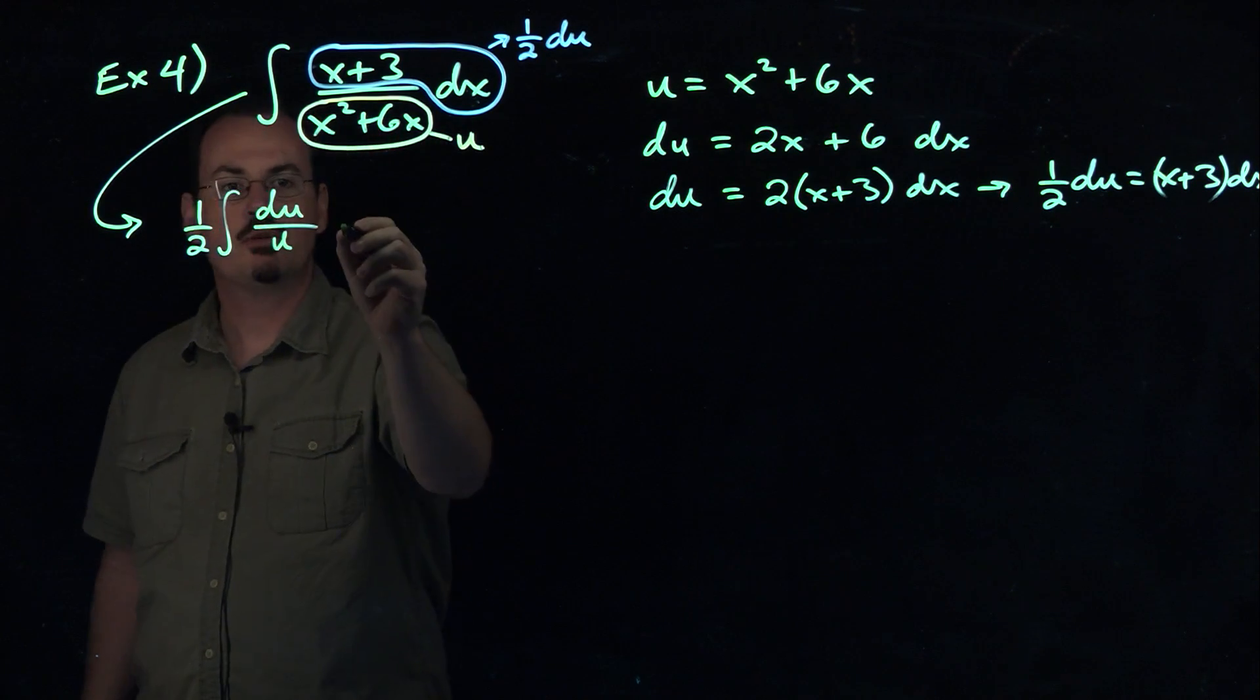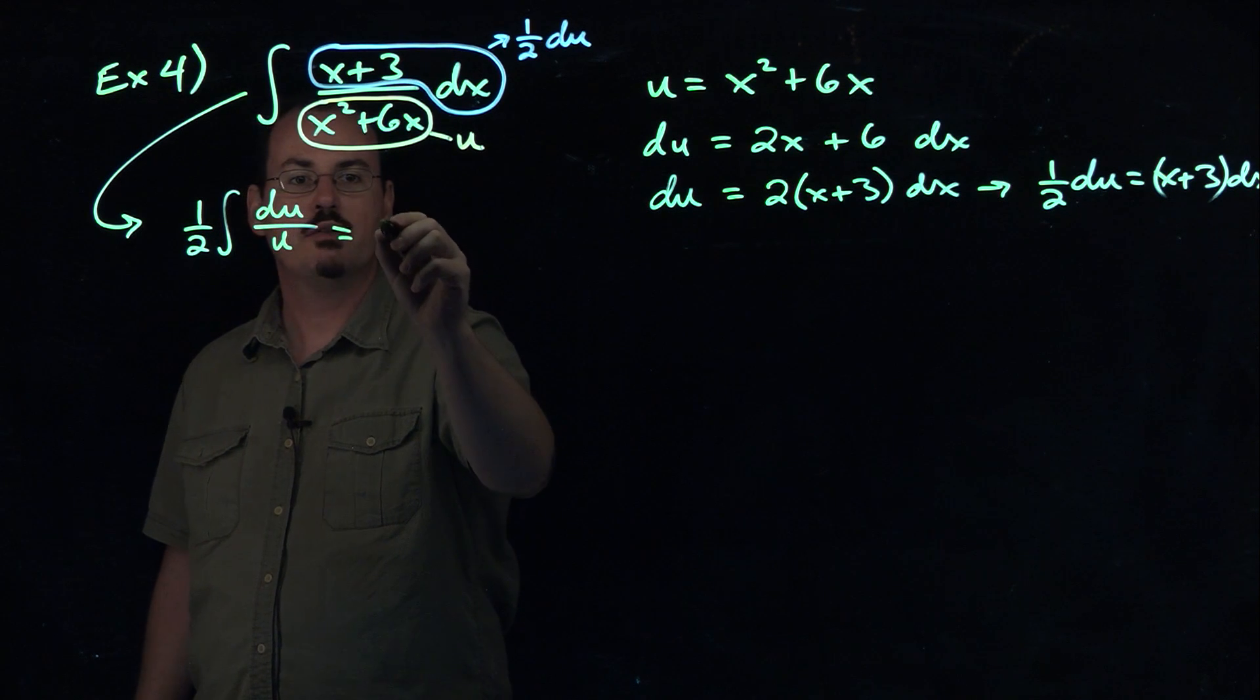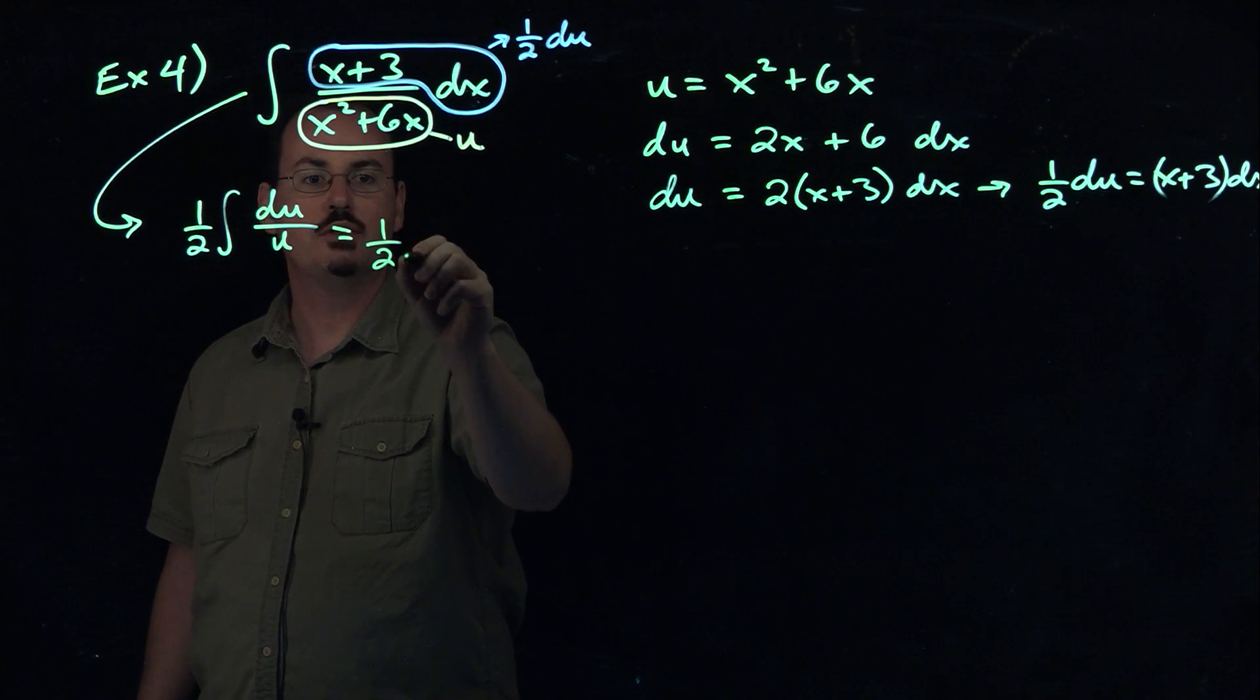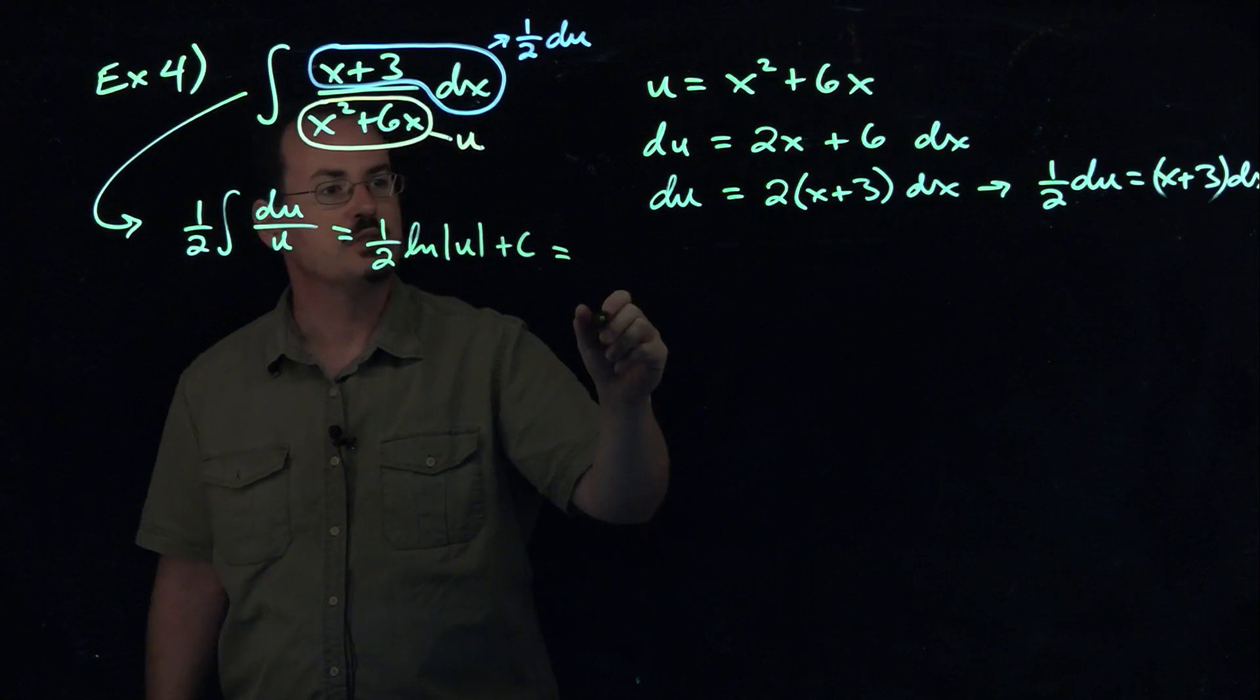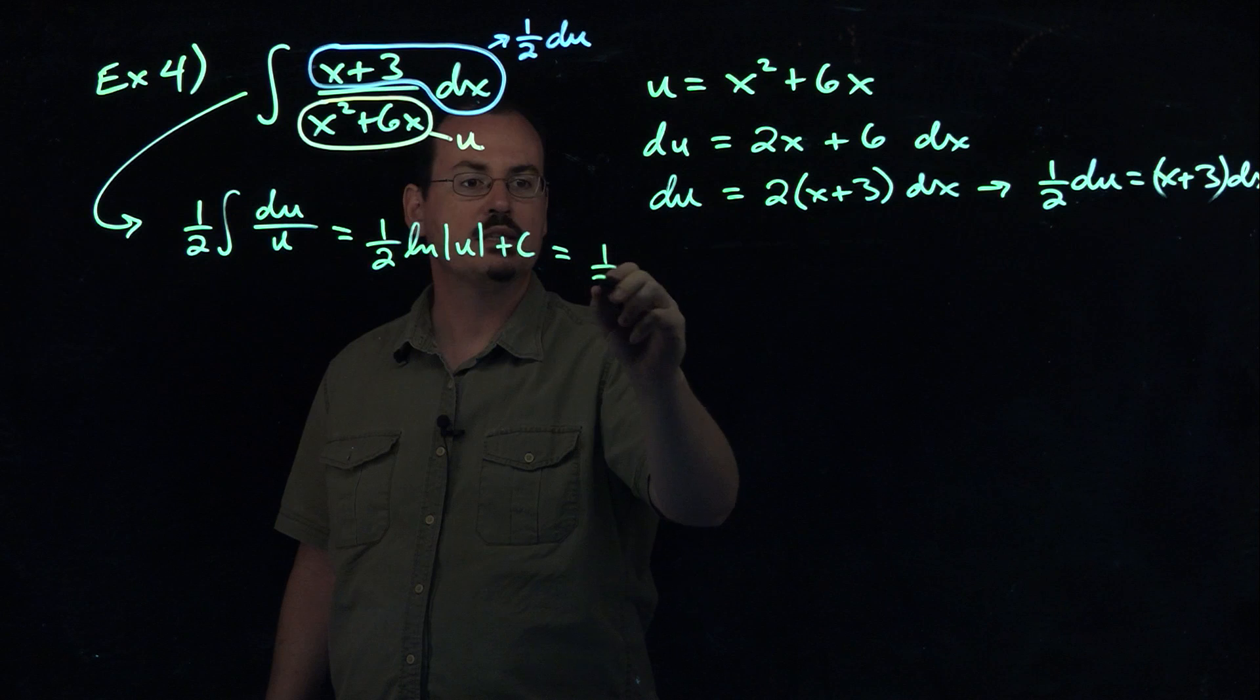So as we remember, du over u, that antiderivative is just natural log of absolute value of u plus a constant. And then the last thing we do is just replace that u with what it is.